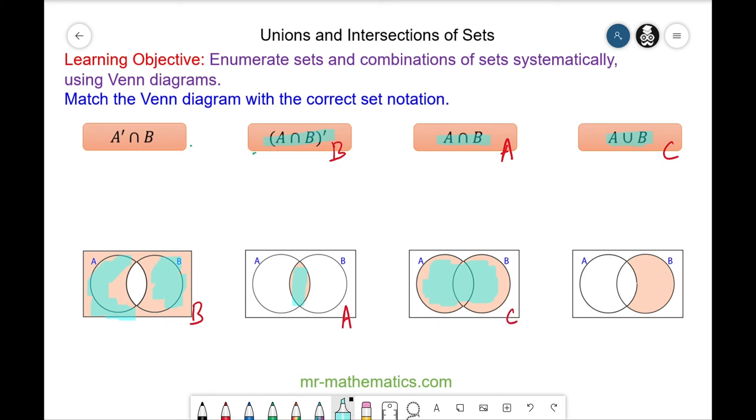And finally not A intersecting with B, which is this region because this is B but it's also not A. So this one matches with this one.